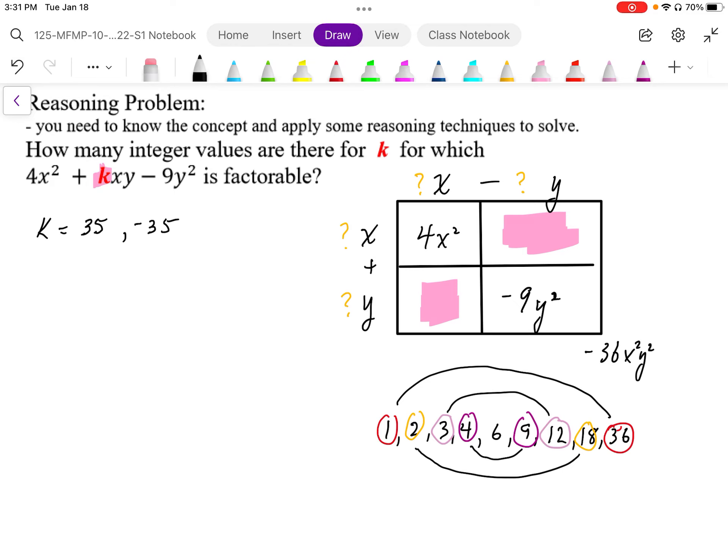So when we pair up the 2 and 18, we need 1 to be positive, 1 to be negative, so we can get positive 16, or we can get negative 16.